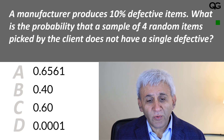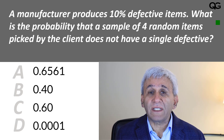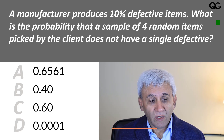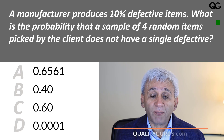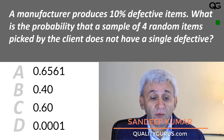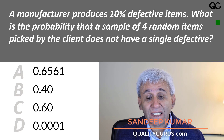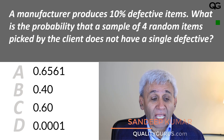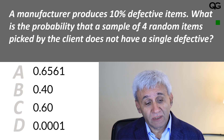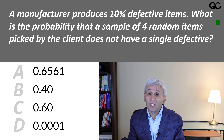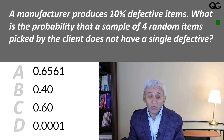A manufacturer produces 10% defective items. What is the probability that a sample of 4 random items picked by the client does not have a single defective? The options are 0.6561, 0.40, 0.60, or 0.0001.